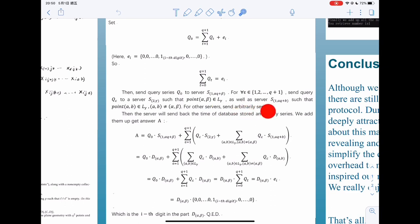As well as the server s1_aq plus b, such as point ab is from l_γ.